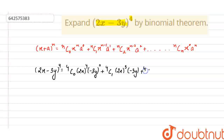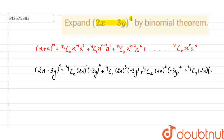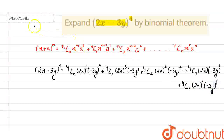The third term is 4C2 · (2x)^2 · (-3y)^2. Then, another term is 4C3 · (2x)^1 · (-3y)^3, and the last term is 4C4 · (2x)^0 · (-3y)^4.